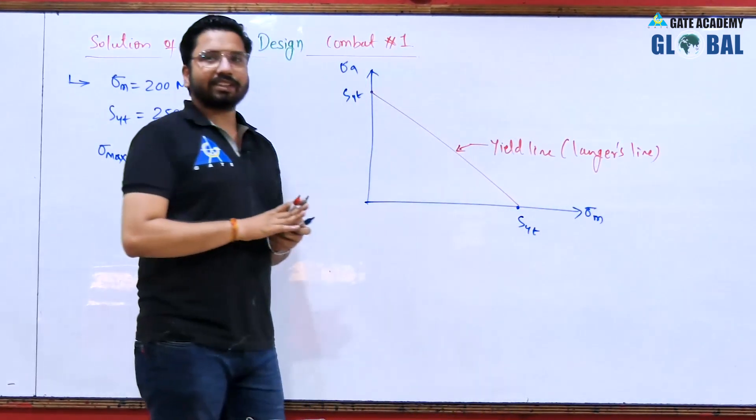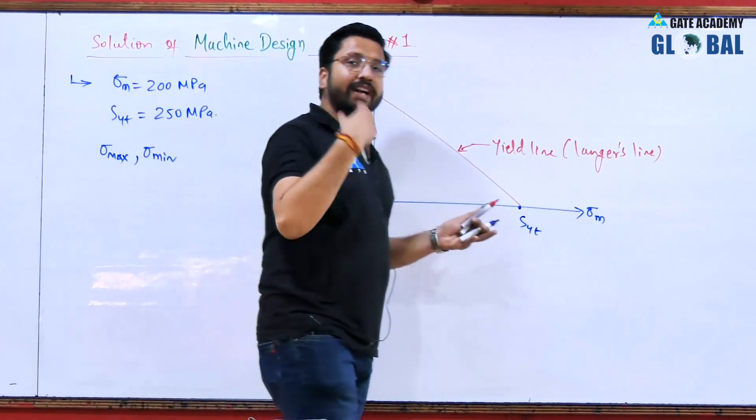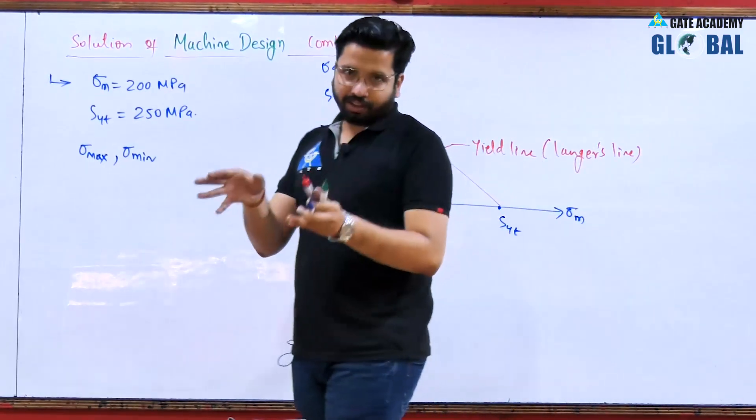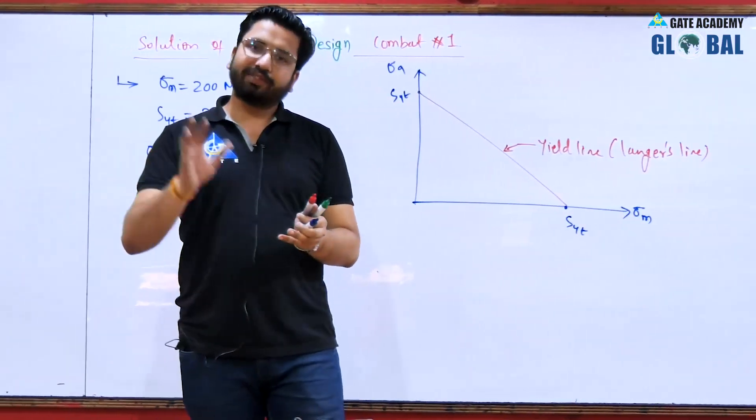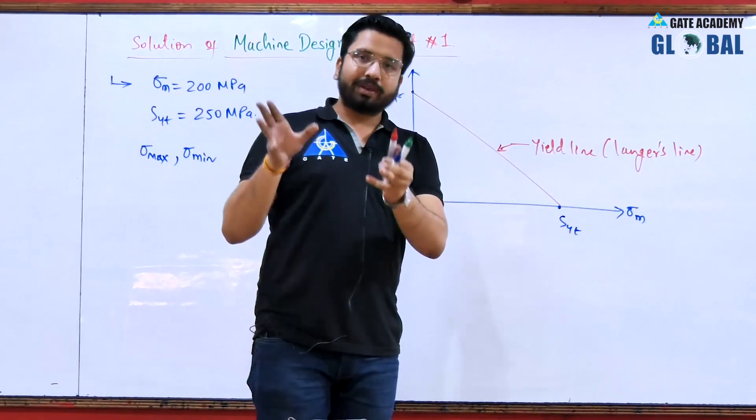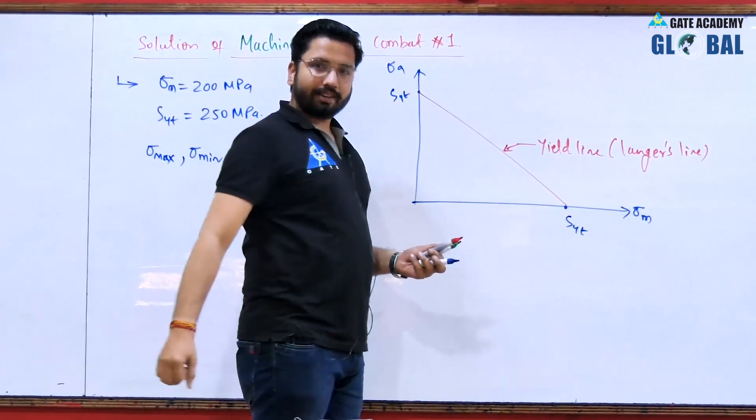The property of this line is such that if the component is loaded along this line then definitely the component will fail in the very first cycle of the loading. In the question also it was mentioned that component must fail in the very first cycle of loading. So from this statement you must have an idea that the component is to be loaded along this line only.